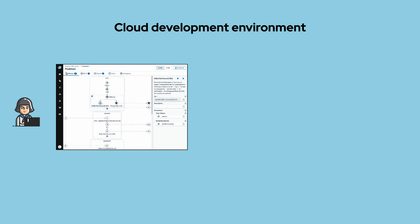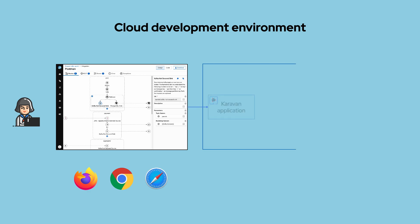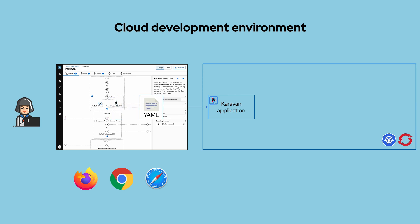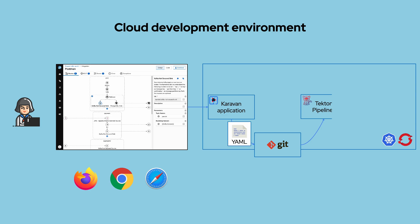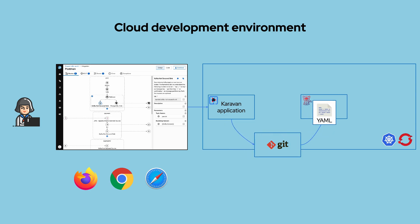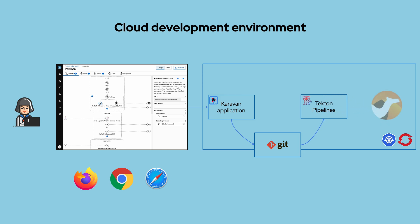Furthermore, when installed in a Kubernetes environment, Caravan can be used as an application in any modern web browser. In that case, Caravan stores integrations as YAML files in a Git repository and starts a Tekton pipeline to package an application, either with Quarkus or Spring Boot runtimes, built and deployed into Kubernetes.